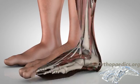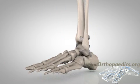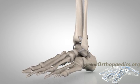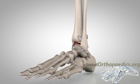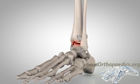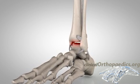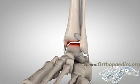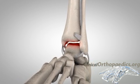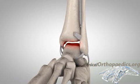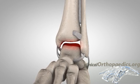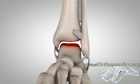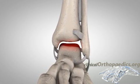We will here concentrate on the tibiotalar joint. The stability of this joint relies on four structures, and the joint remains stable as long as at least three of these four structures are intact.